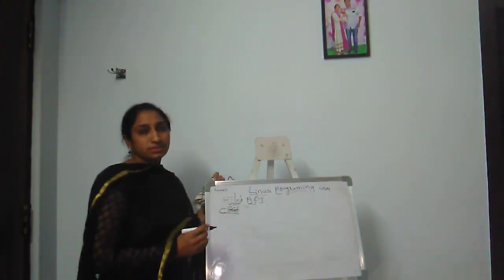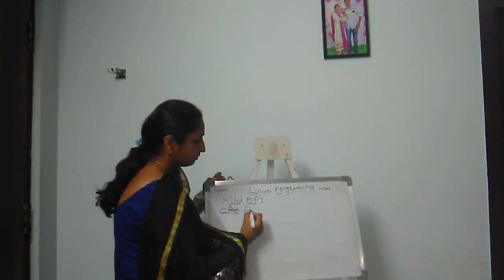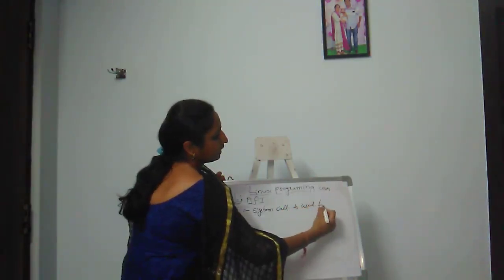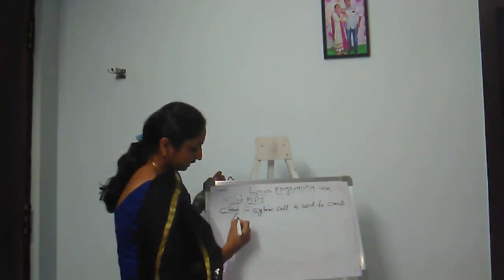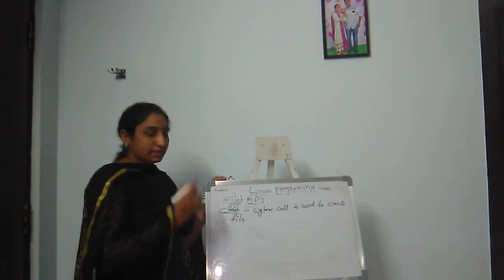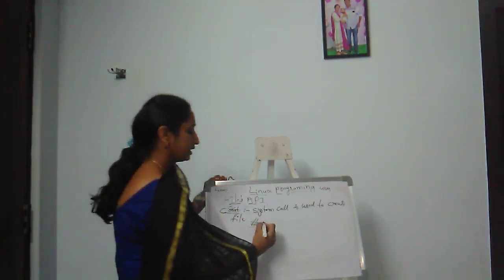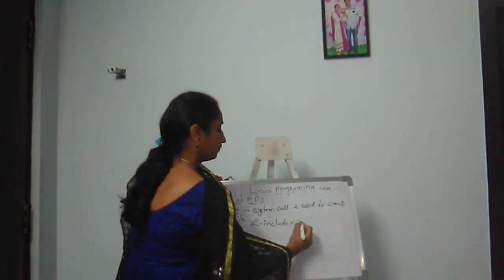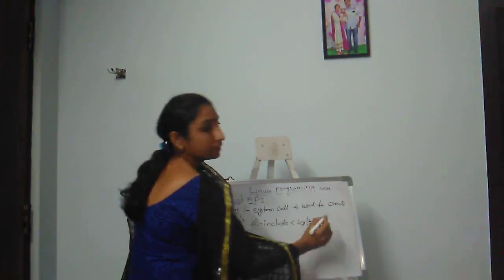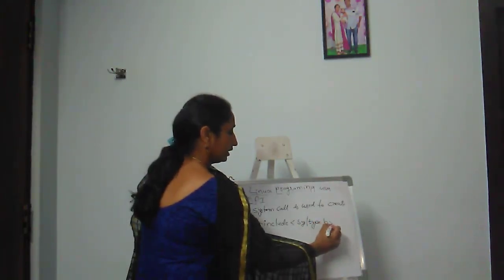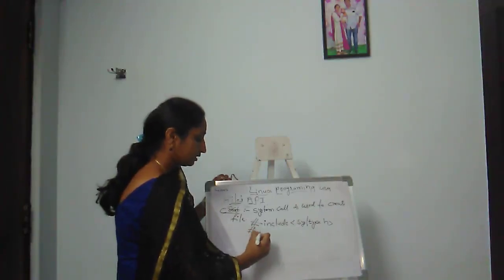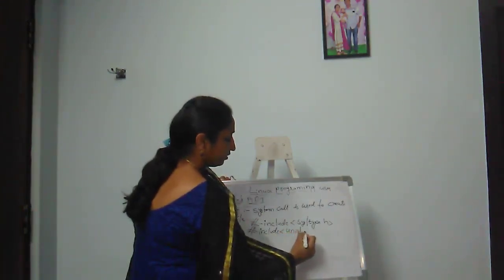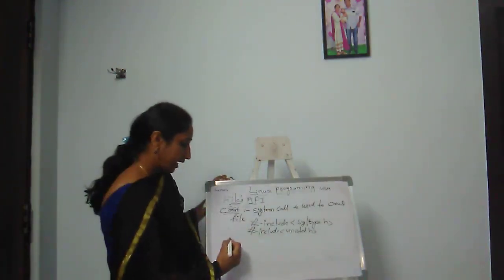This creat system call is used to create a file. The header files are the same for all system calls: hash include sys/types.h and hash include unistd.h.